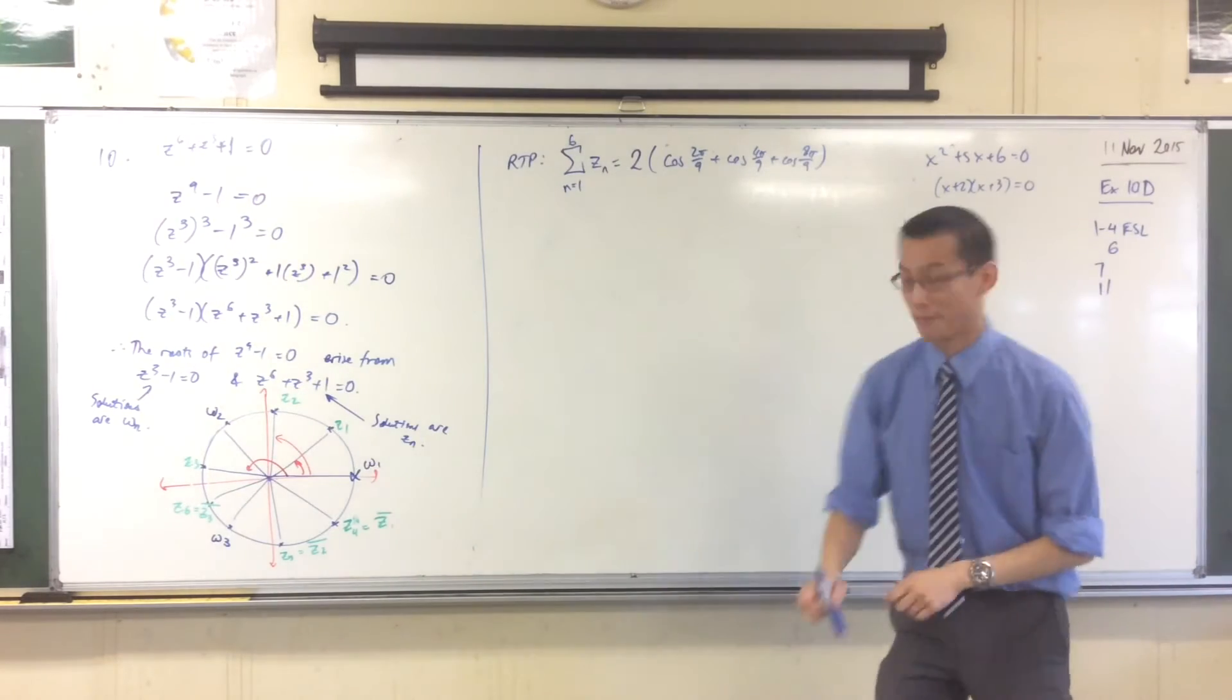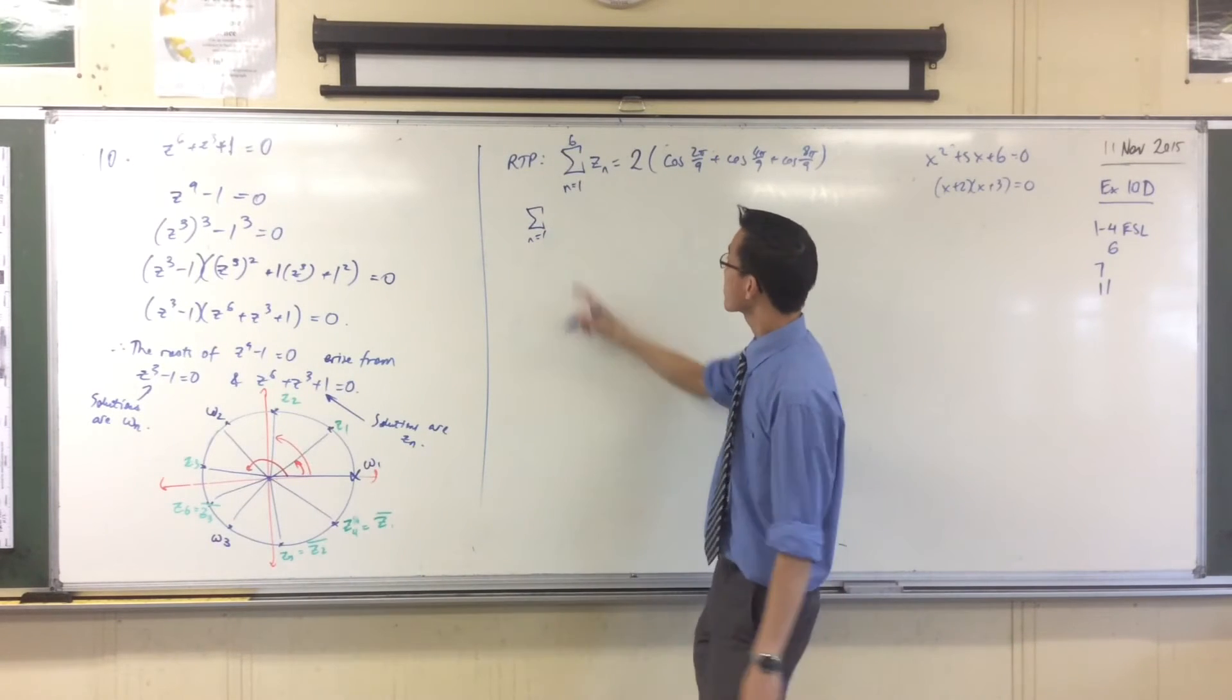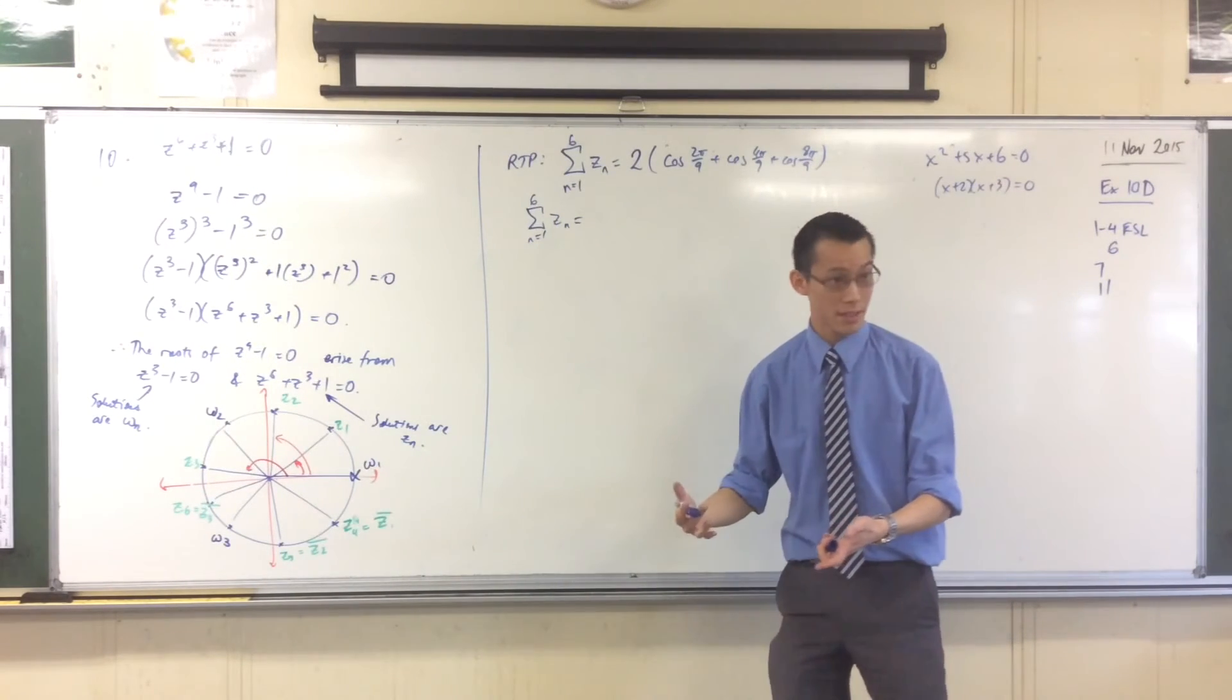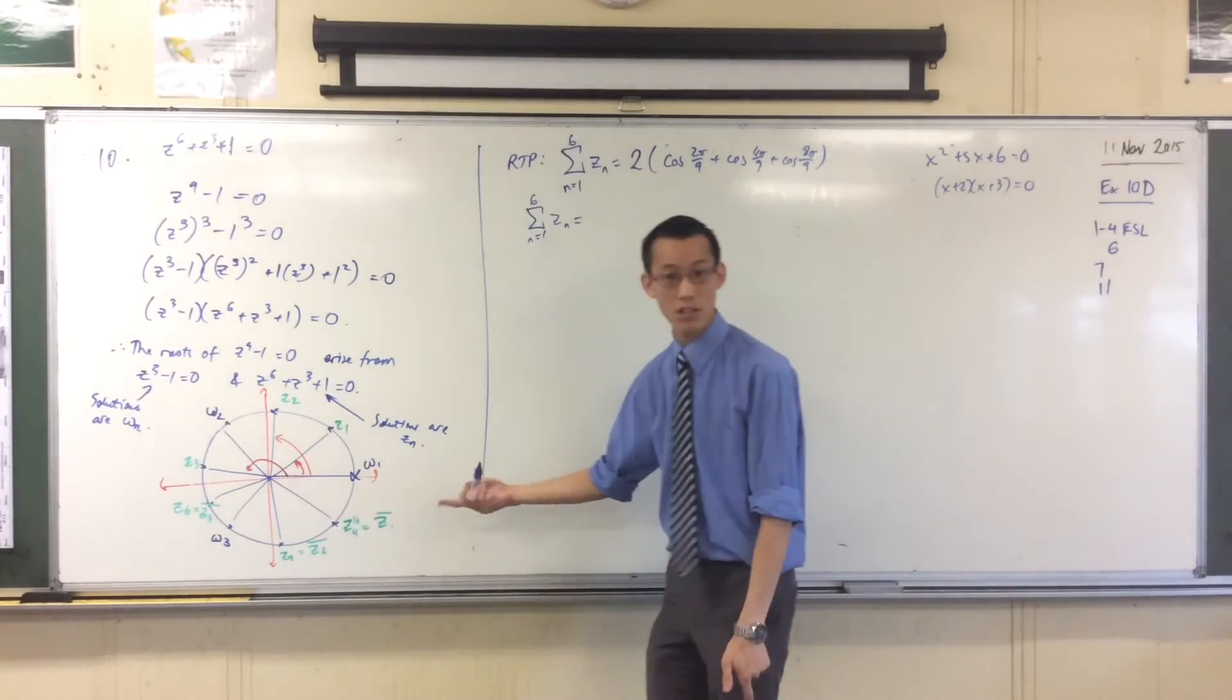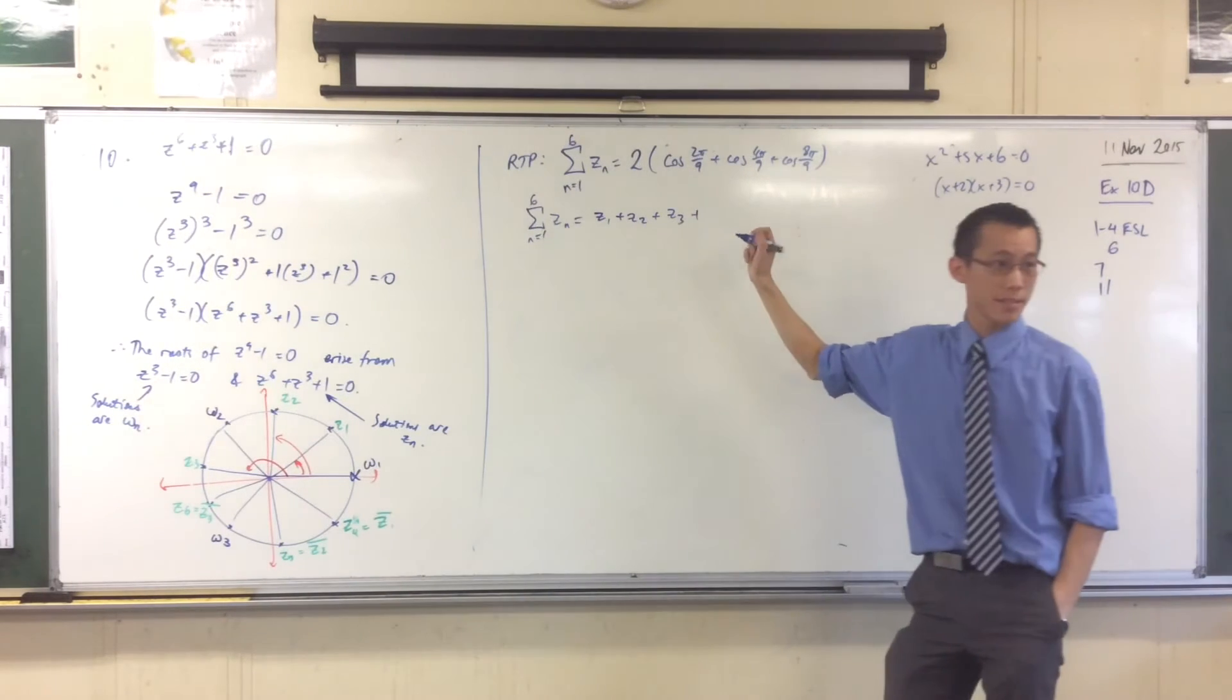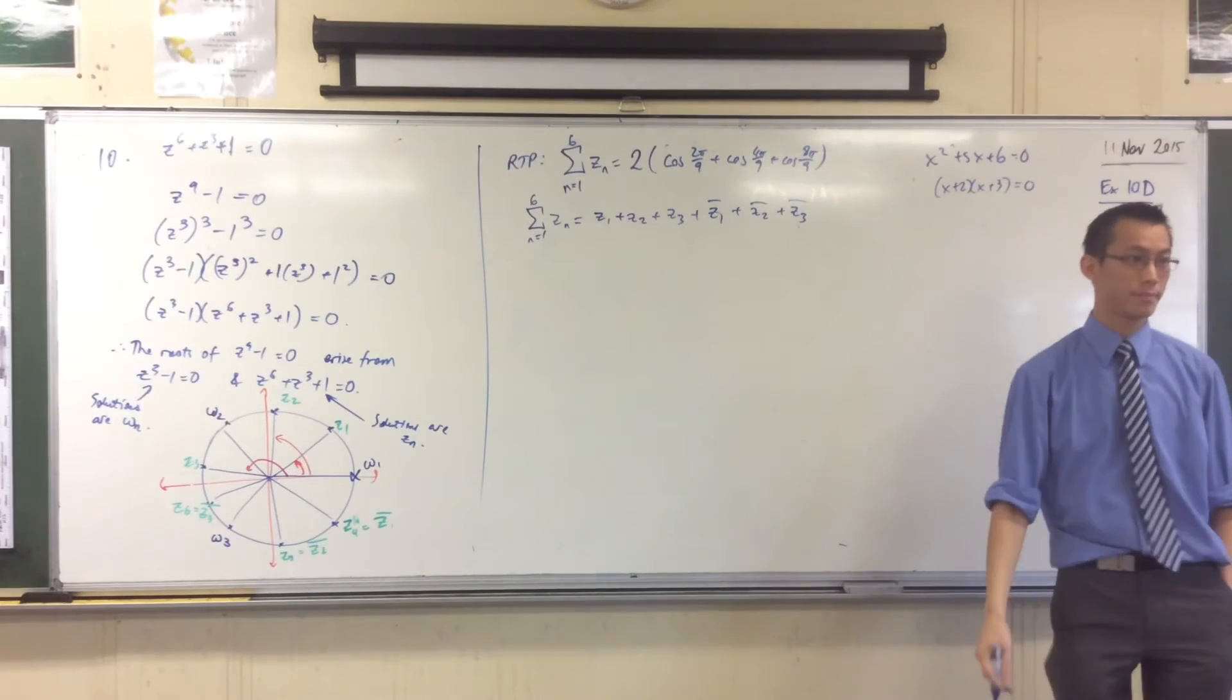How do I demonstrate this? Really easily. I'm going to say, this is what I'm required to prove. So this is the way that I would set it out, is equal to, it's just Z1, Z2, Z3, Z4, Z5, Z6, but these Z4, Z5, Z6s are actually conjugates, so I'm going to include that in my work. Z1 plus Z2 plus Z3 plus, now my conjugates come in. Conjugate of one, conjugate of two, conjugate of three. Is that okay there?